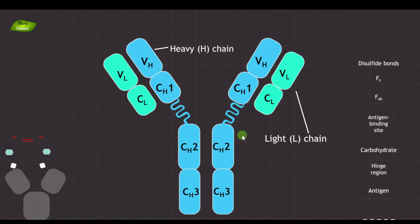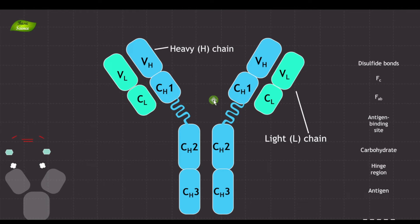Antibody, also known as immunoglobulin, is a vital component of the immune system responsible for recognizing and neutralizing foreign invaders. They can neutralize viruses, toxins, and bacteria. Antibodies are composed of two identical heavy chains and two identical light chains. The structure has both a FAB and an FC region.